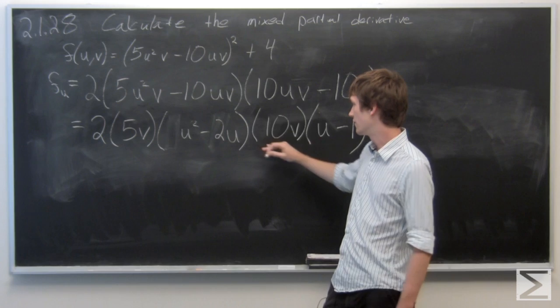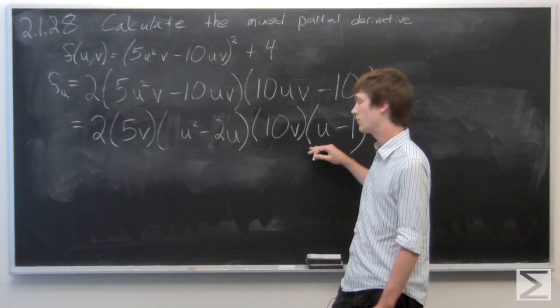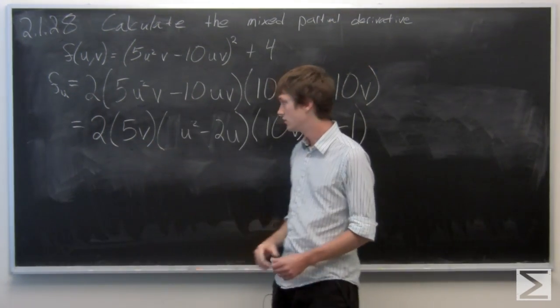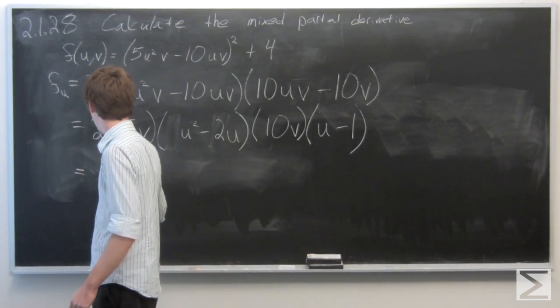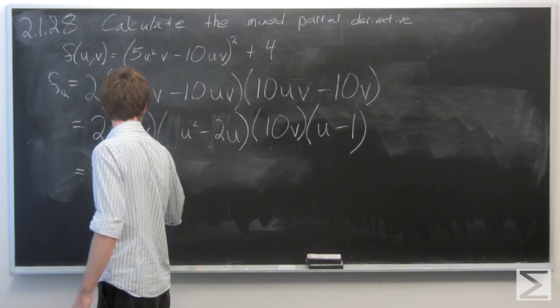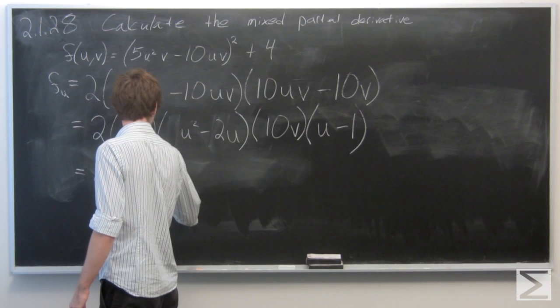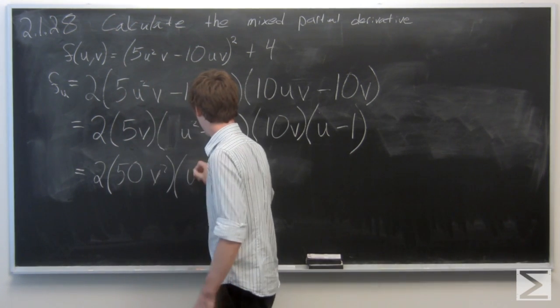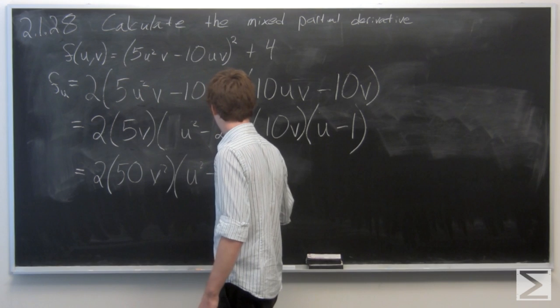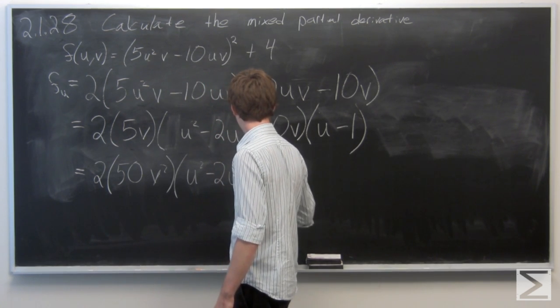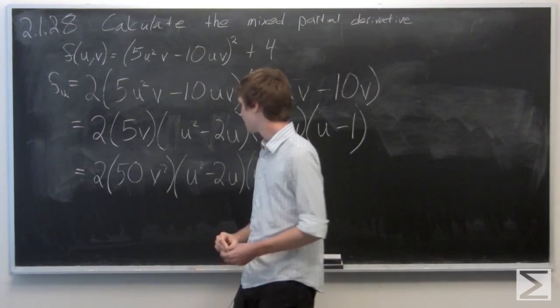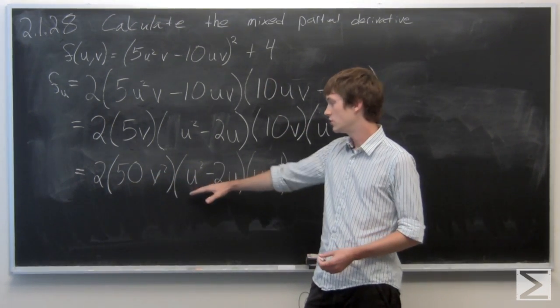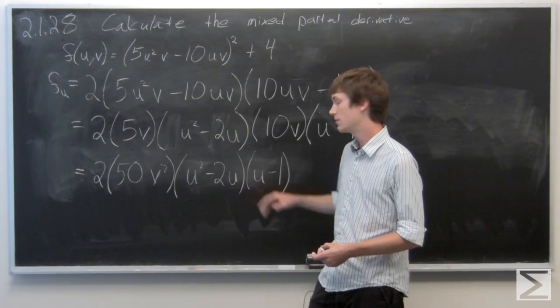And we'll pull a 10v out of the second term and we get 10v times u minus 1. So let's combine these two v terms. And we get 2 times 50v² times u² minus 2u times u minus 1.